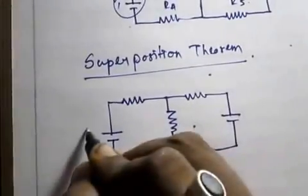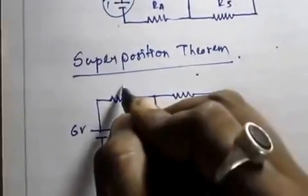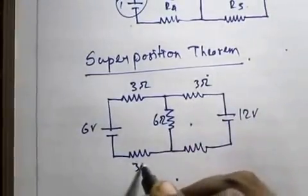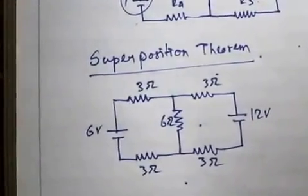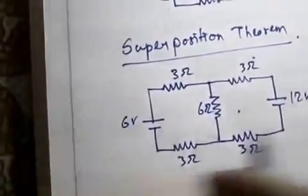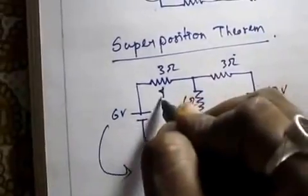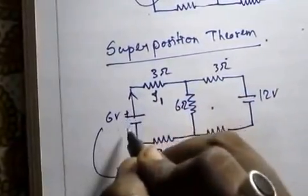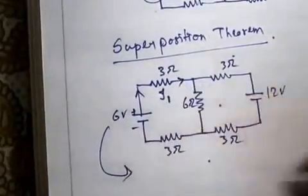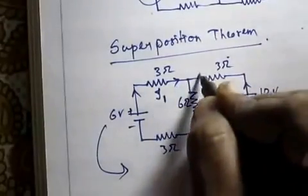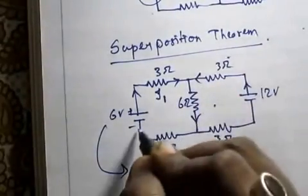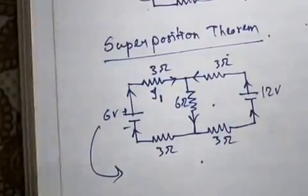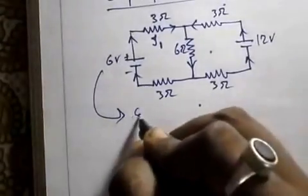Let's take a simpler circuit: a 6V source, a 12V source, and resistors of 3Ω, 6Ω, 3Ω, and 3Ω. This circuit looks a little simpler. We need to find the current i1. First, establish the current directions — from the 6V source, the positive and negative sides determine how current flows through each branch.